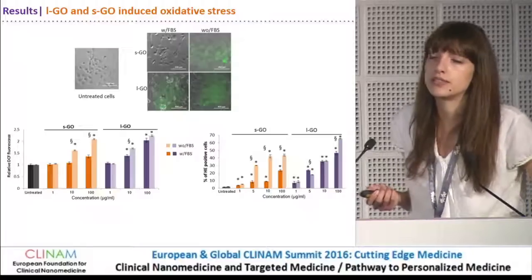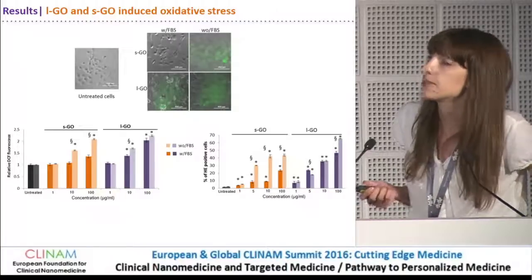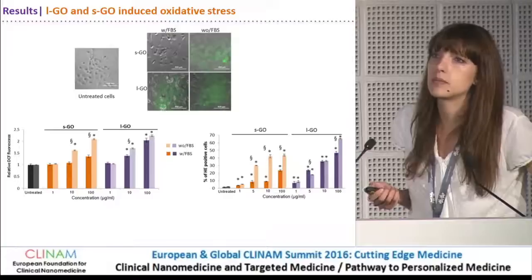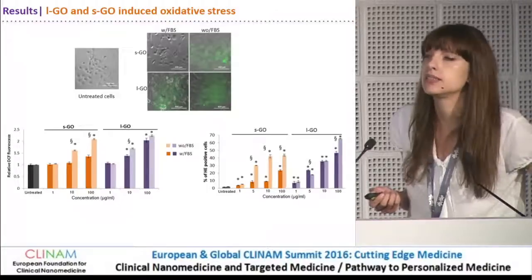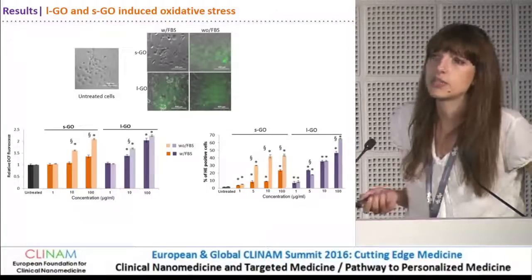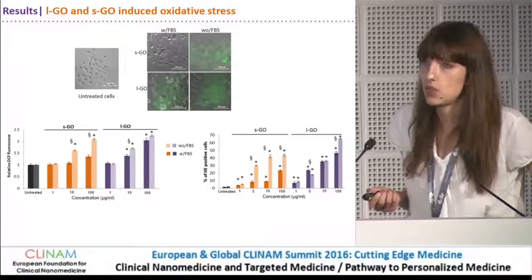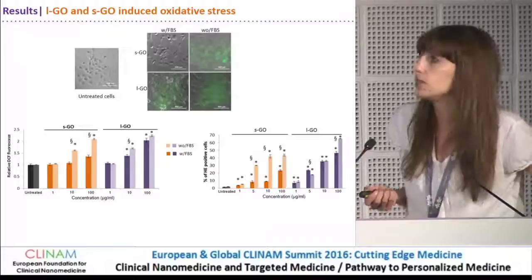The dye enters the cell freely through the plasma membrane, but then becomes oxidized inside the cell if there is increased ROS, and it is non-cell permeable.